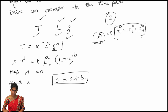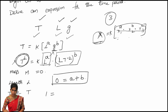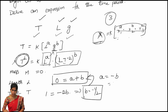Next, comparing the powers of the third fundamental quantity, time T: on the left-hand side the power of T is 1. On the right-hand side, the first quantity has no time, and the second quantity has T power minus 2, whole power B, giving minus 2B. So 1 equals minus 2B, which gives B equals minus 1 by 2. Substituting B into A plus B equals 0, we get A equals minus B equals minus of minus 1 by 2, so A equals 1 by 2.